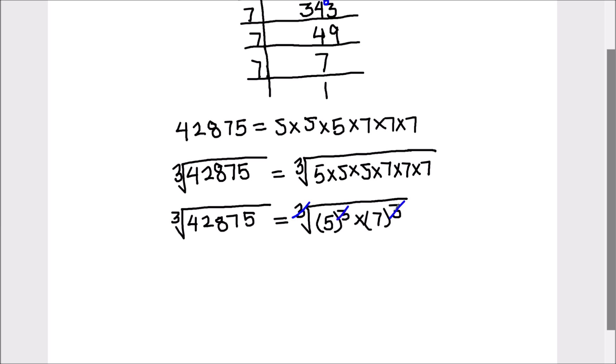These numbers are cube and this cube root and cube gets cancelled, and both the numbers will come out of the cube root sign. So cube root of 42,875 will be 5 times 7. 5 times 7 equals 35. Cube root of 42,875 equals 35.